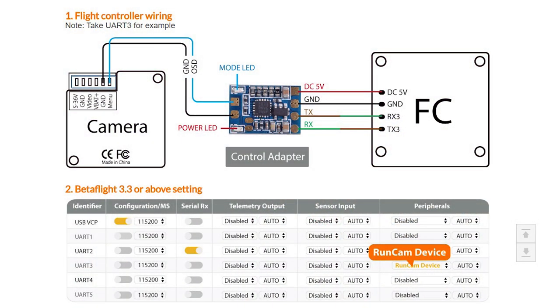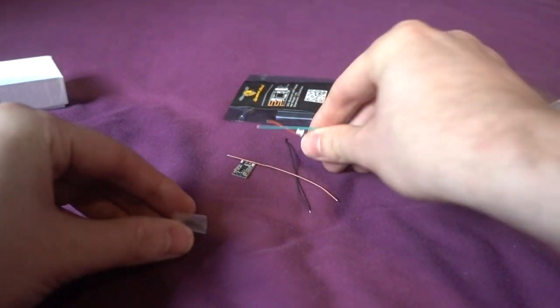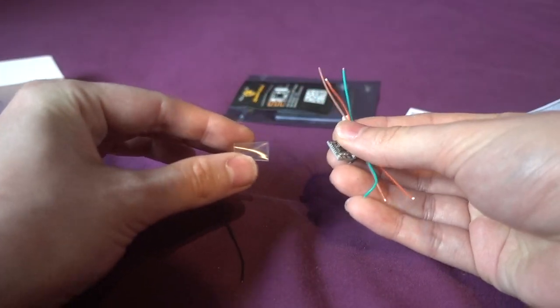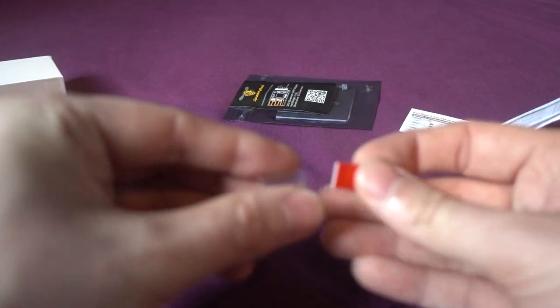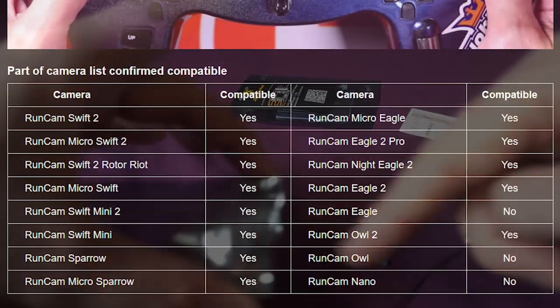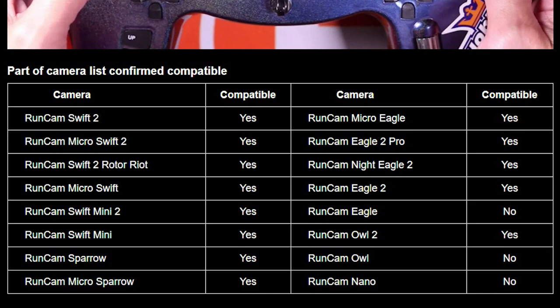But then we've also got a heat shrink and some spare cables in there as well. And there's also a sticky pad. I guess for sticking it maybe to the back of your camera if you like. Yeah, I'll put a chart down here so you can see the cameras that are and are not supported because not all of them are, which I think is unfortunate.